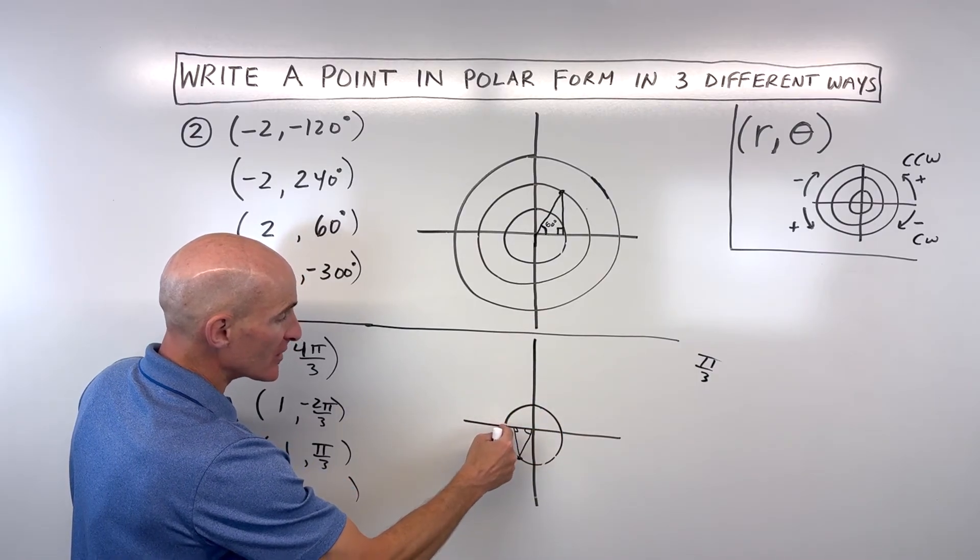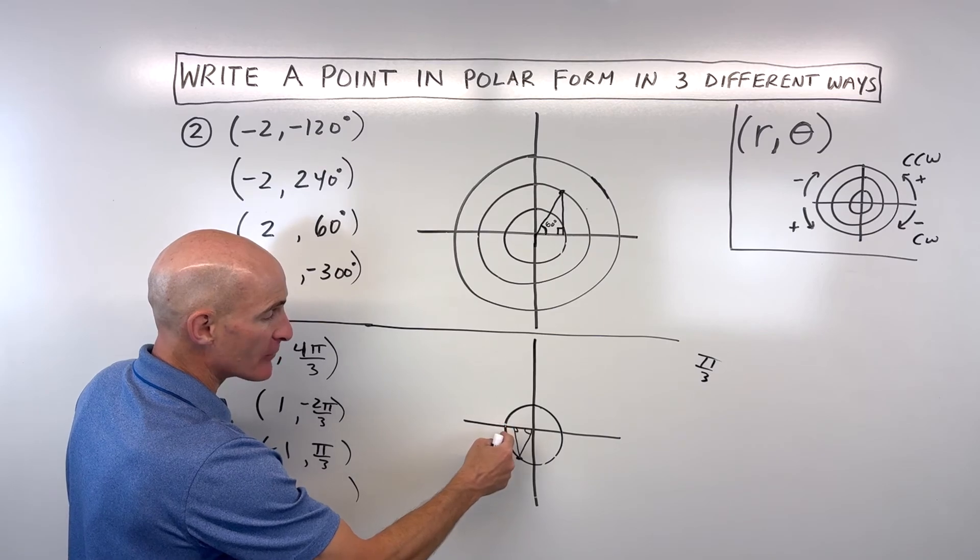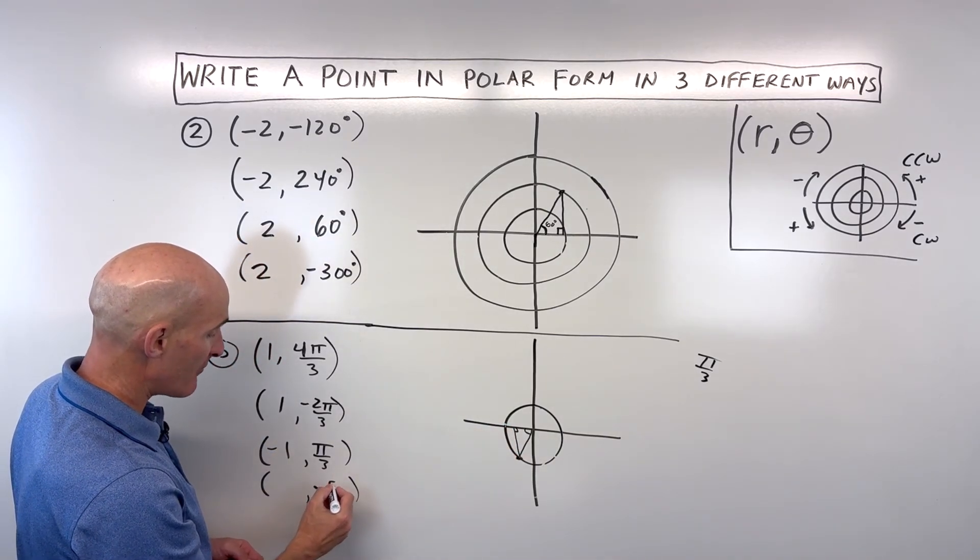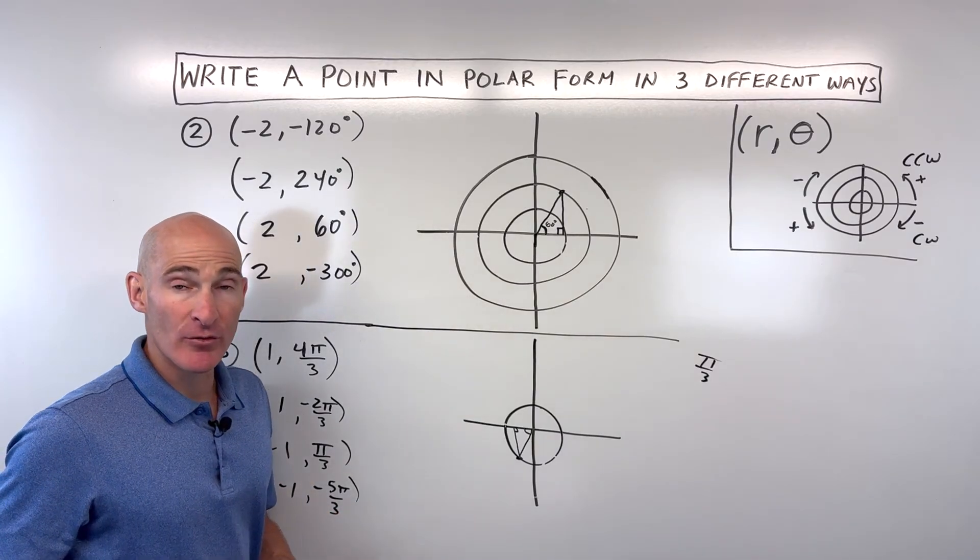Or we could go negative one and go clockwise, almost one revolution like two pi, less pi over three. Now, two pi is six pi over three minus one pi over three, which is five pi over three.